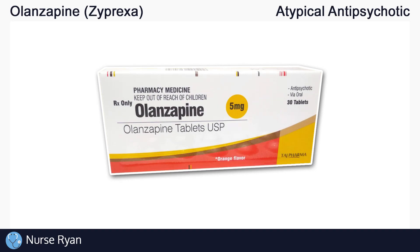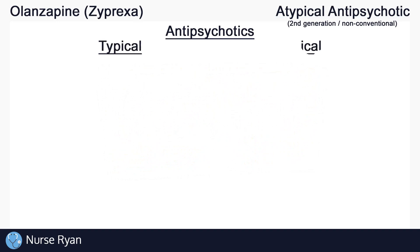Olanzapine belongs to the atypical antipsychotic drug classification. Atypical antipsychotics are also known as second-generation antipsychotics or non-conventional antipsychotics. Before we get into olanzapine specifically, we'll review the two main antipsychotic drug classes, which are the typical antipsychotics and the atypical antipsychotics.